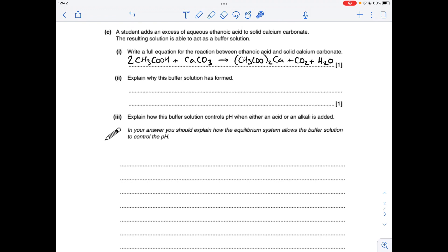Moving on to part C, which is about buffer solutions. So full equation for the reaction between ethanoic acid and solid calcium carbonate. So it just looks like that. Just be careful with the formula of the salt. Remember, the ethanoate ion is 1 minus, so we'll need 2 of those for every calcium 2 plus ion.